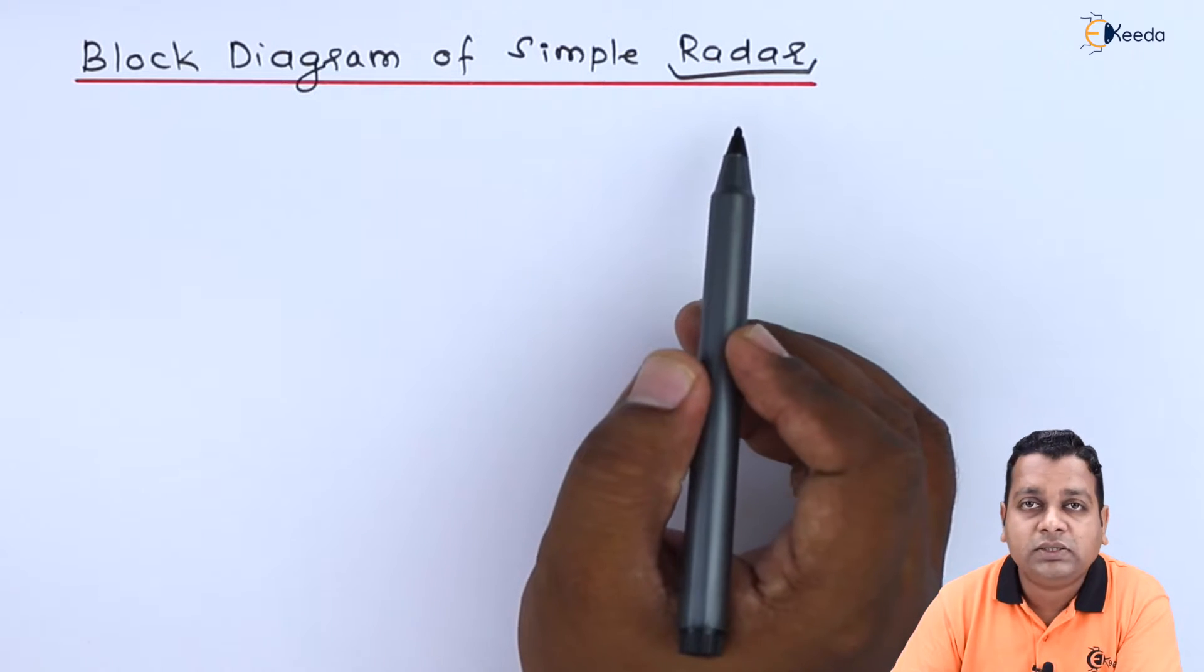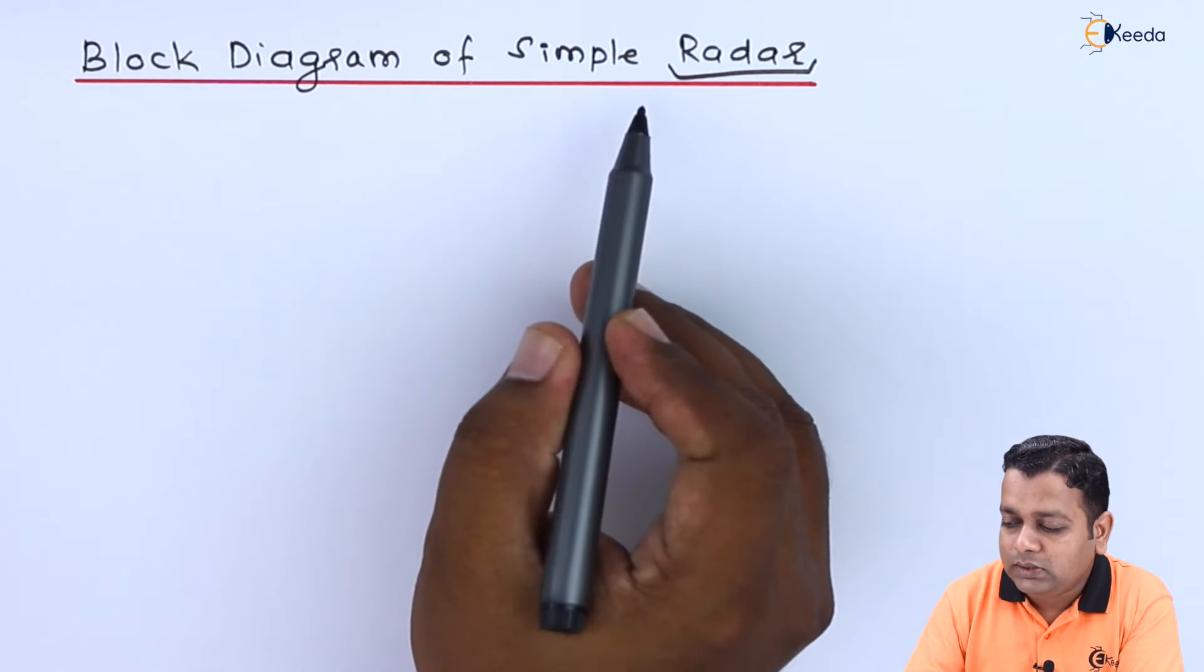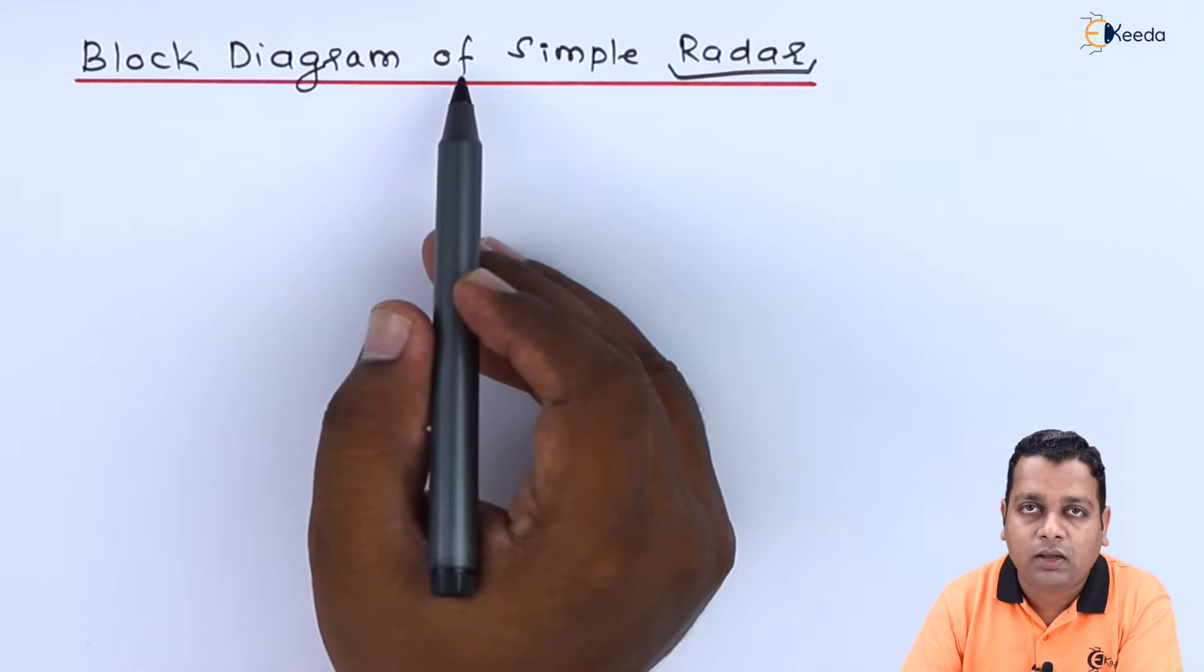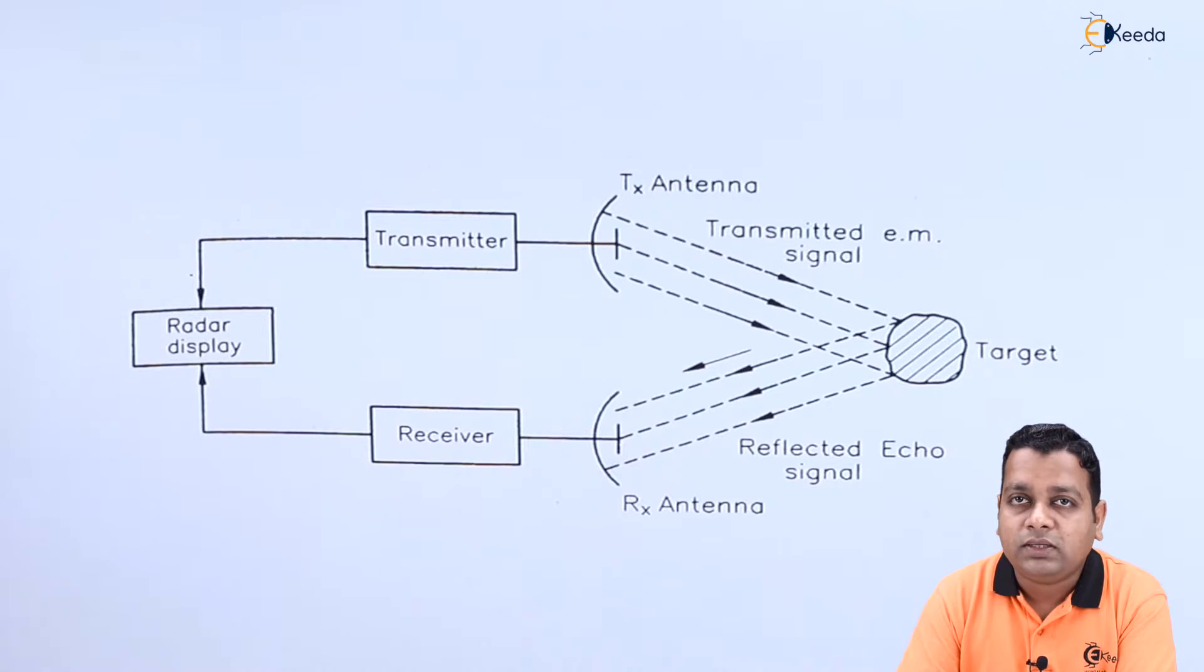Hence the name radio detection and ranging. The information is in terms of range, angle, and velocity. For such a simple type of radar, let us have first of all a visualization of the block diagram.